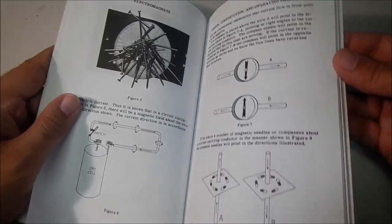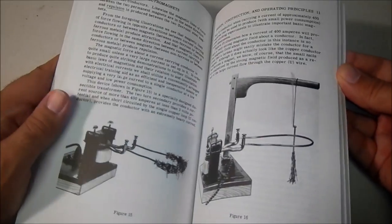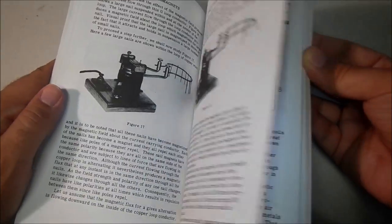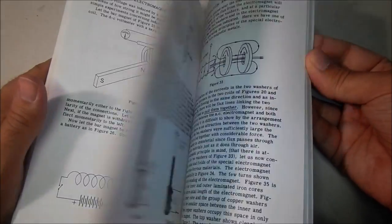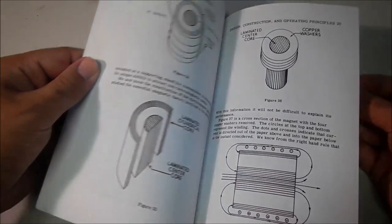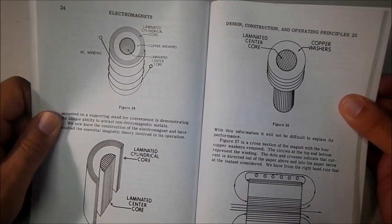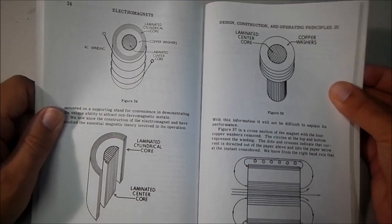He also shares some other interesting overview of electromagnetic fields and different experiments you can do. One thing that is lacking is some design equations that would help you build or optimize his AC electromagnet for non-ferrous metals.